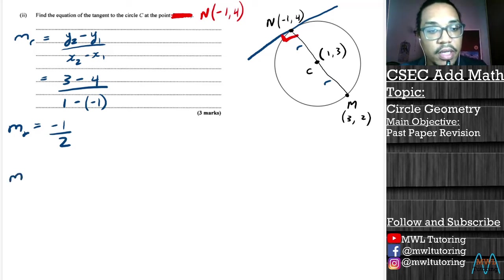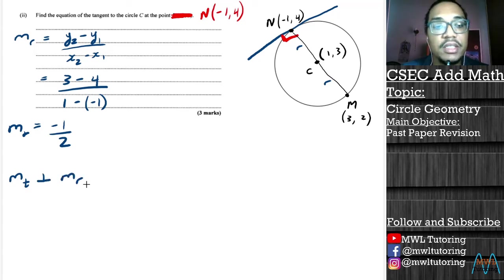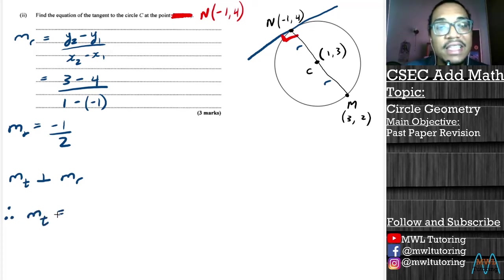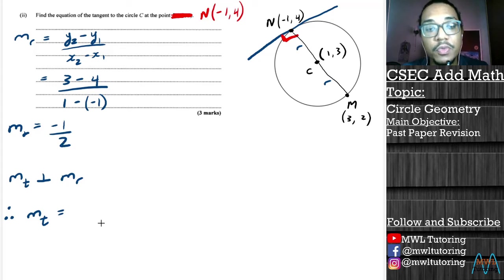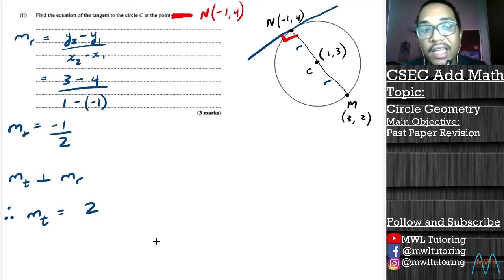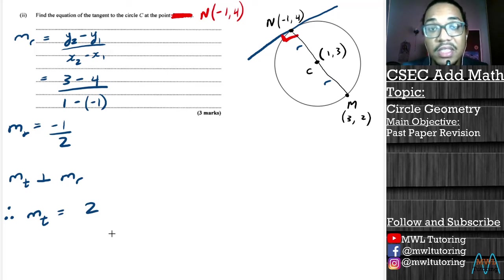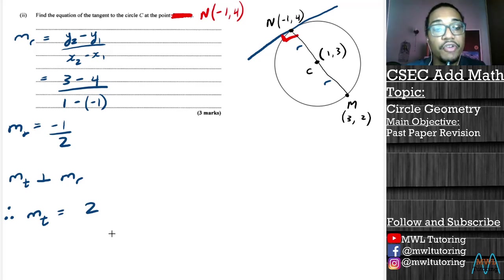Because the tangent is perpendicular to the radius, the gradient of the tangent mT is equal to the negative reciprocal of the gradient of the radius mR. Very simply: we flip the fraction — from 1/2 we flip it to 2/1, or just 2 — and we change the sign from negative to positive. That's what negative reciprocal means: flip the fraction, change the sign. So the gradient of our tangent is 2.